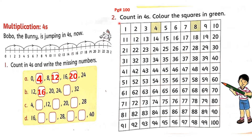Now move on to question number 2 — count in 4s and color the squares in green. Here we will skip 3 numbers. What number is written in the 4th box? You have to color it green. Number 4 is already done. Next — 5, 6, 7 you will skip. What number is written in the 4th box? Yes, number 8 — do color it green. Skip next 3 numbers — 9, 10, 11. What number is written in the 4th box? Yes, 12 — do color it green. Count 4 more, skip next 3 numbers — 13, 14, 15. What number is written in the 4th box? Yes, 16 — do color it green. In the same way, students, you will complete this whole chart till 100.